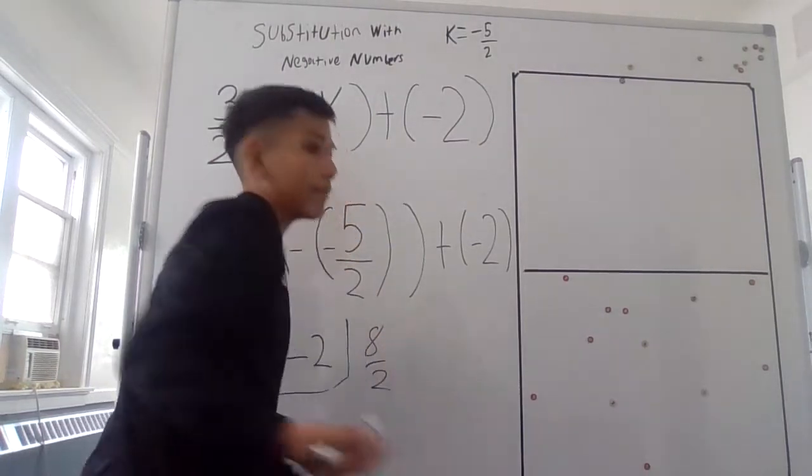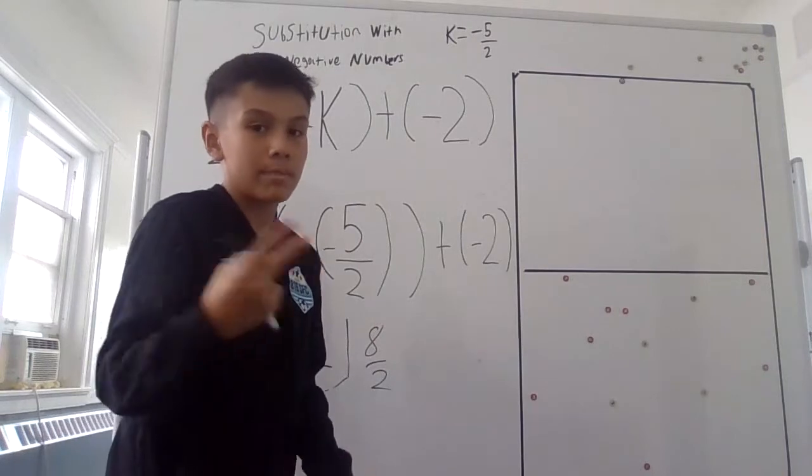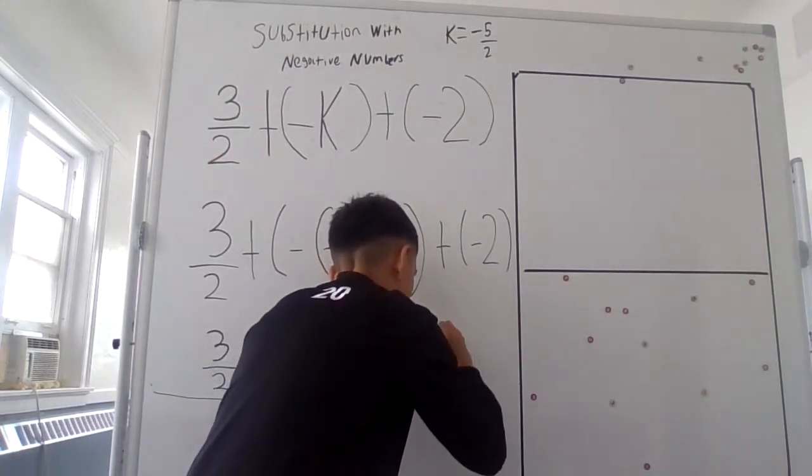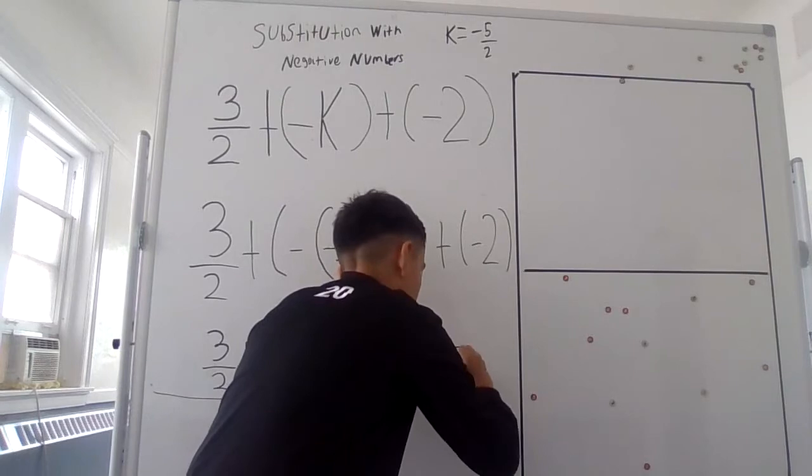And then subtract, and if I divide it by 4, it's going to get me 2. So I'm dividing it by 4, and it equals 2.